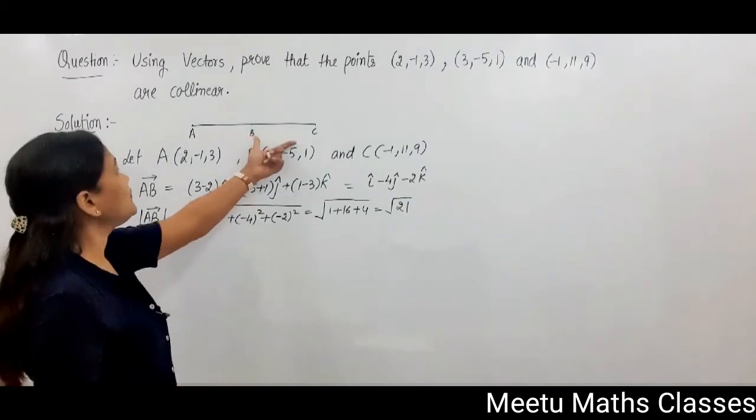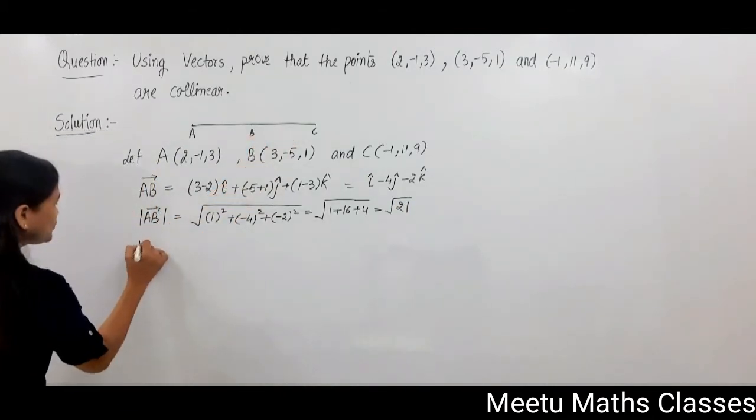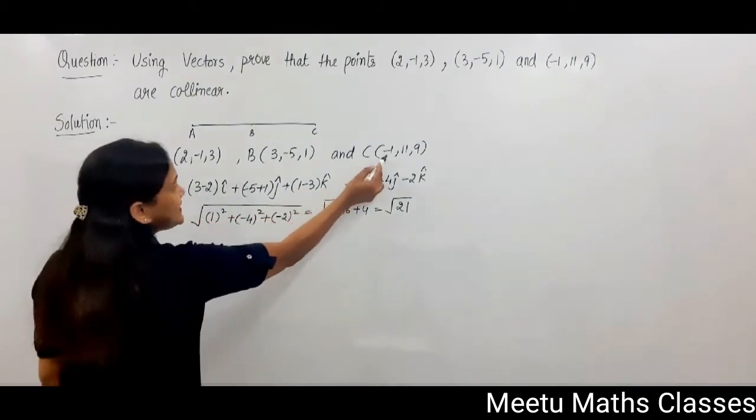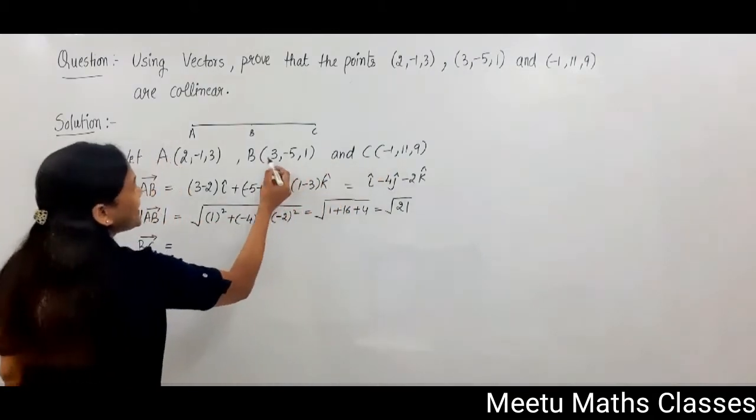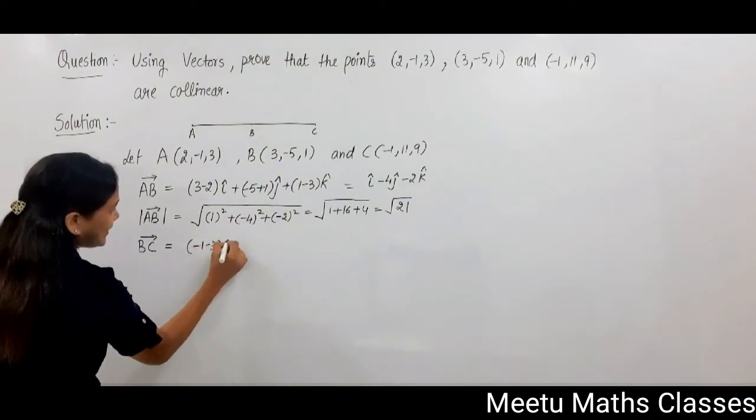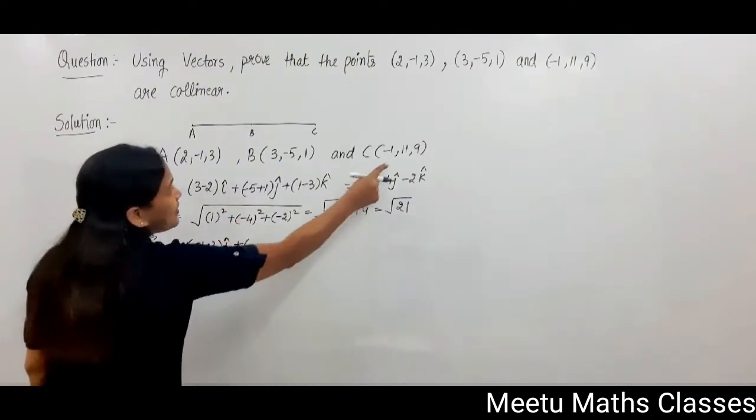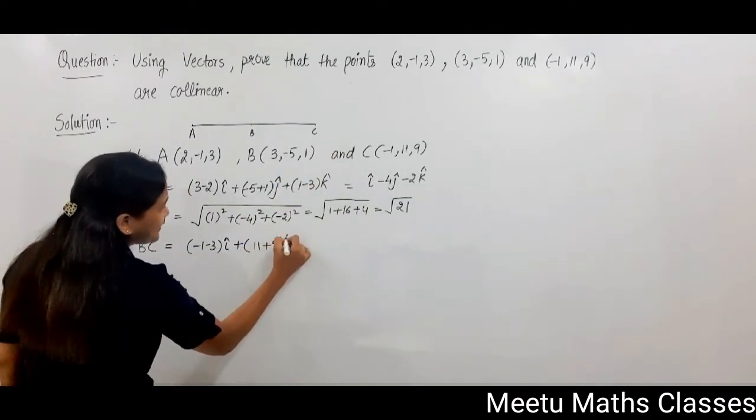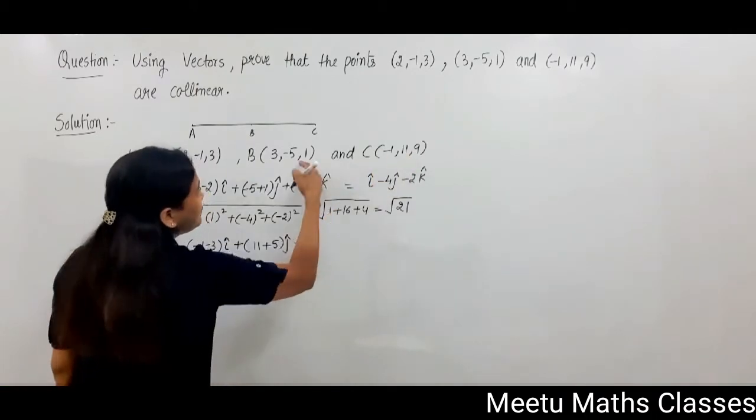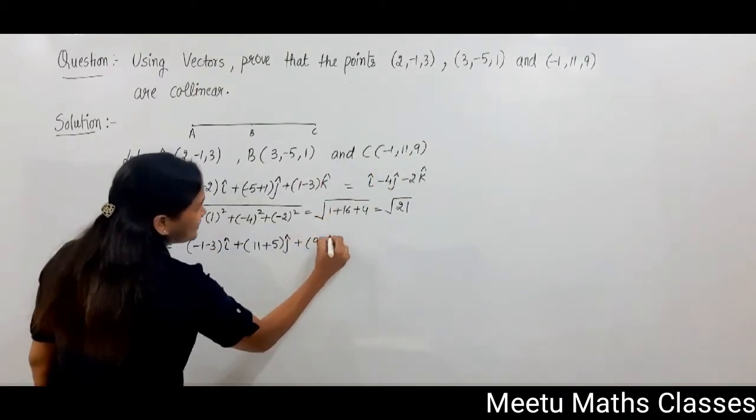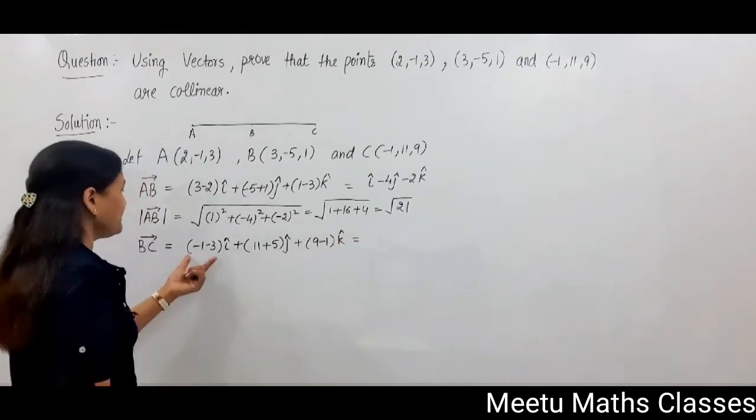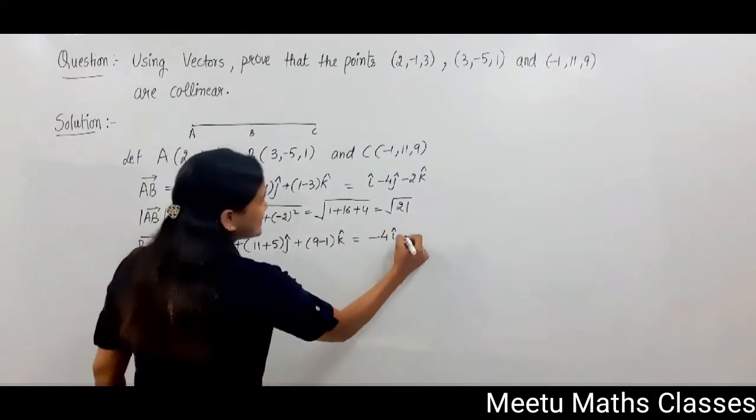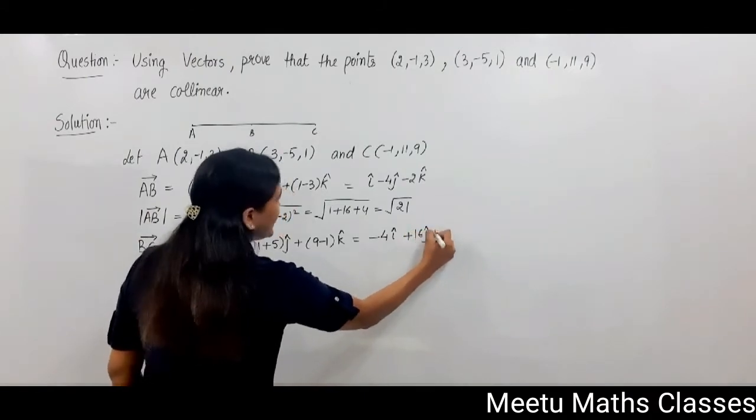Now we are going to find out BC vector. So BC vector here equals C minus B, that is (-1-3)i plus (11-(-5))j plus (9-1)k, and that equals -4i + 16j + 8k.